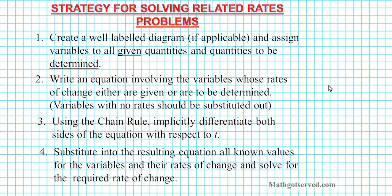Step three, you use the chain rule to implicitly differentiate both sides of the equation with respect to t. And then in part four, which is the easy part, you substitute into the resulting equation all known values for the variables and their rates of change and solve for the required rates of change. Okay? So these are the steps that we'll be following in solving this problem.